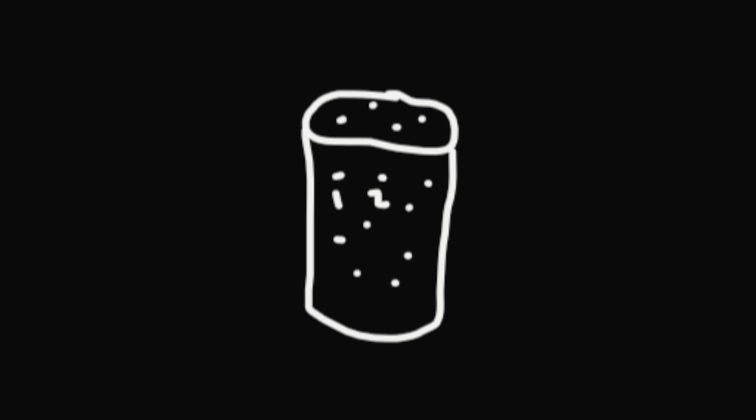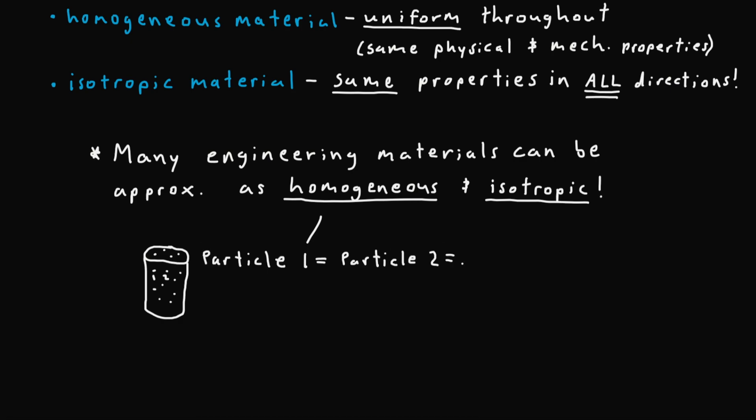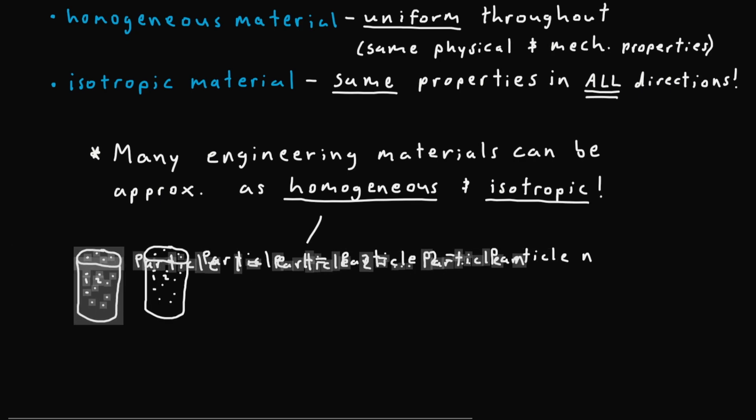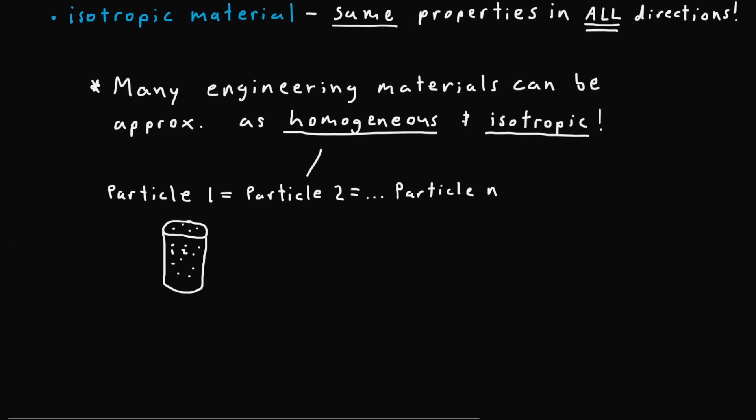particle 2, and so on. So now if this is homogeneous material then that means that particle 1 must be equal to particle 2 which should be all equal to every other particle within this body. So particle 1 equals particle 2 which equals any arbitrary particle n.